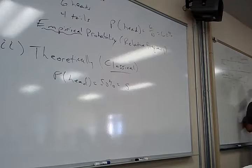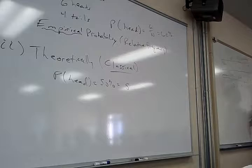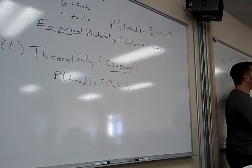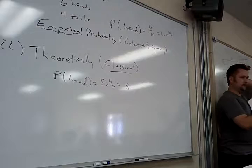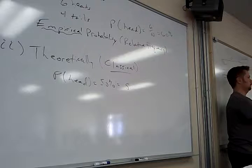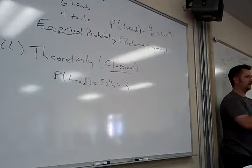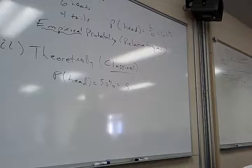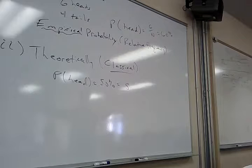Here's where it gets weird: what's the probability I pick somebody who's a woman or not left-handed? That would be all women plus all not left-handers. If I blindly do 26 women plus 38 not left-handers, I get 64 over 45, which is greater than 1. If you ever get a probability greater than 1, something is wrong — probability cannot be greater than 1.